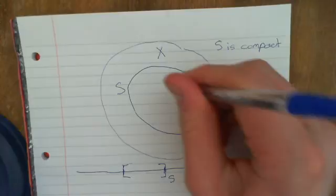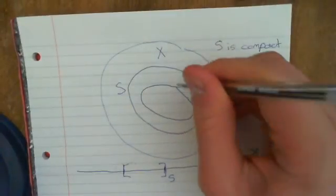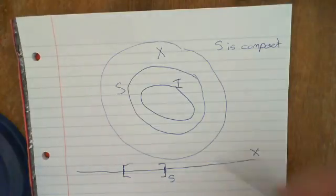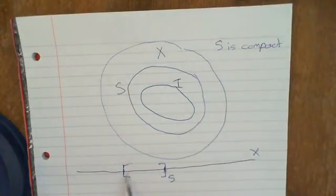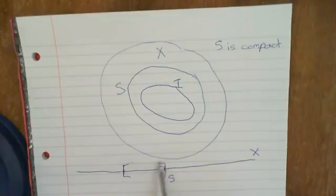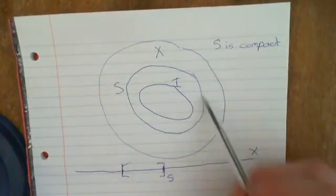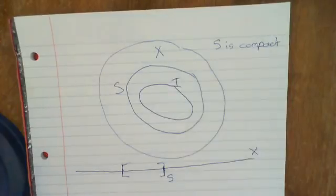And then we've got another set within it, we'll call that set T. T is some infinite set. It could be a sequence, an infinite sequence in this region here. But it's an infinite set contained within S, which is a compact set contained within the metric space X.